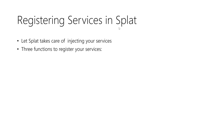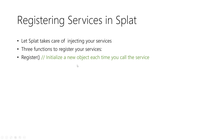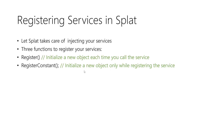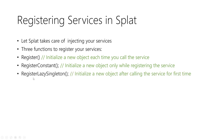You can use the Splat locator to inject those objects for the classes that need to depend on them. To register a service, we have three functions. The first is Register - it sets up a service but creates a new instance each time you call it. The second is RegisterConstant - it initializes one object when registering and that single object persists for the application lifetime. The third is RegisterLazySingleton - similar to RegisterConstant but it initializes the object after you call it for the first time, not during initialization.